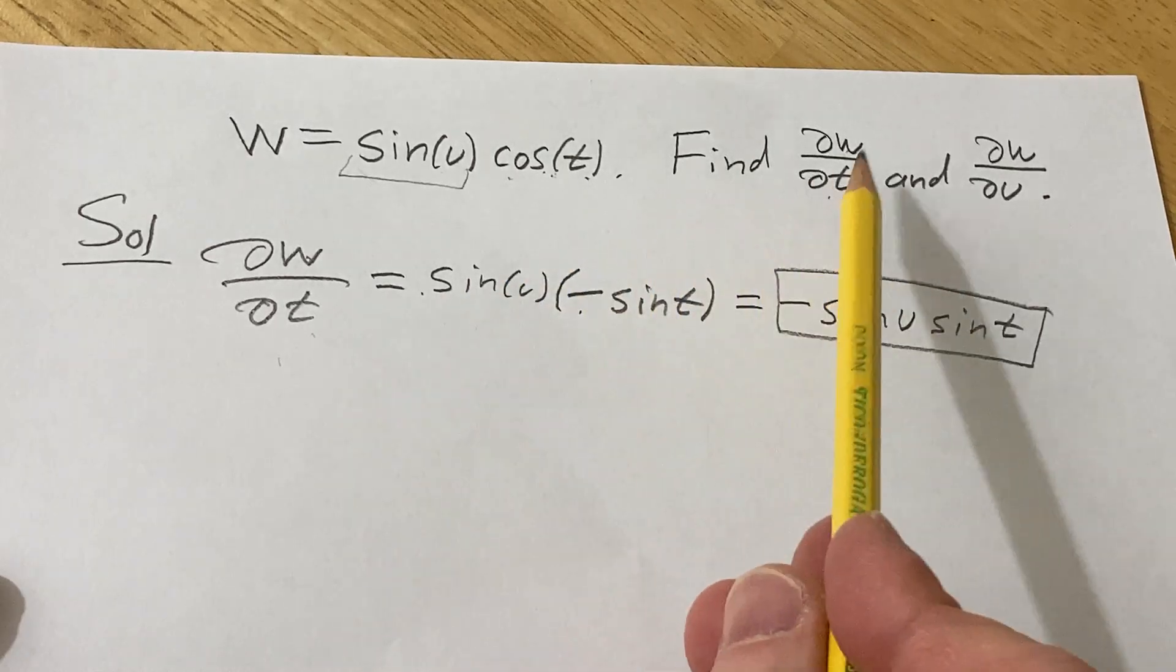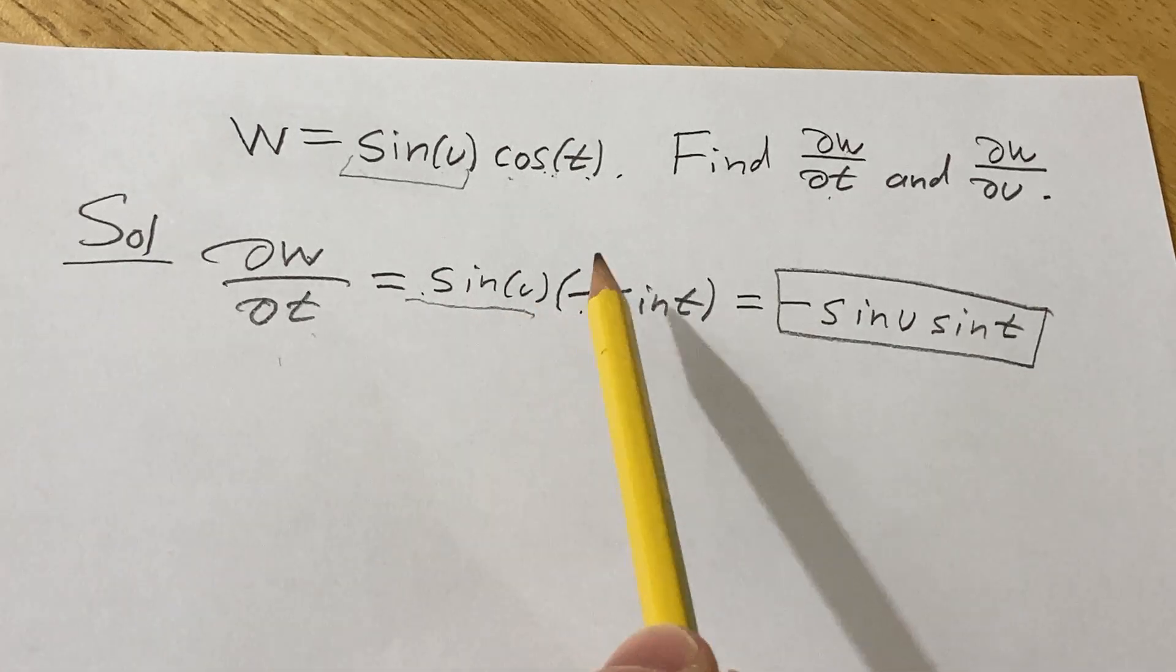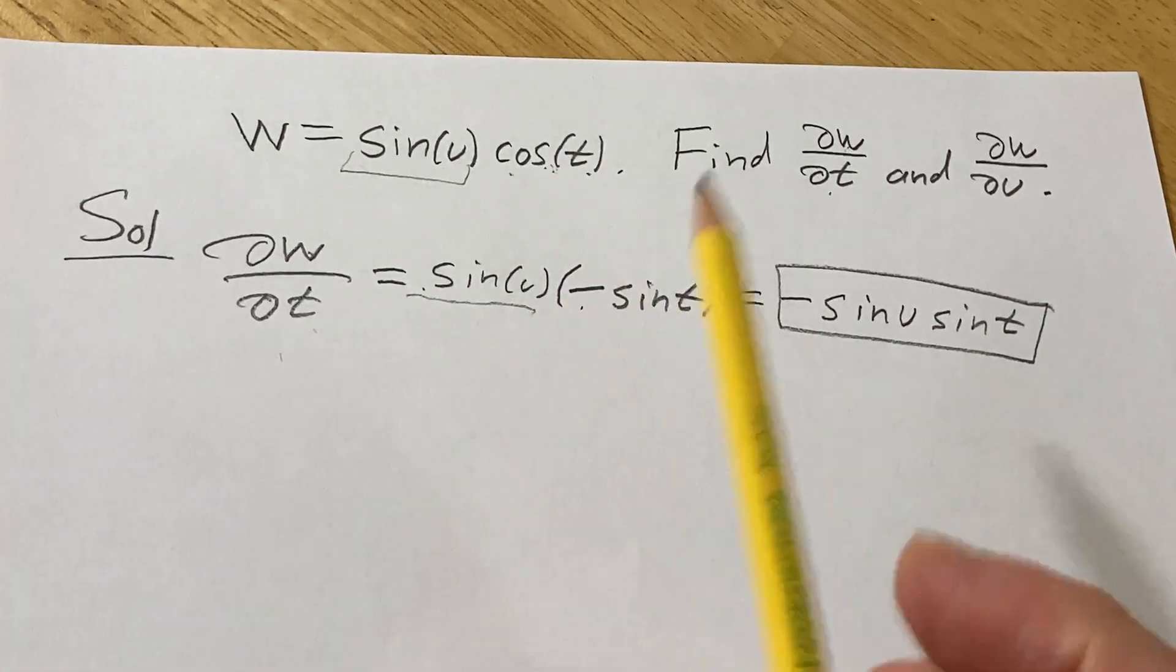Again, because we're finding the partial with respect to t, we treat all of the u's as constants, so this hangs out, and then you just take the derivative of cosine, which is negative sine.